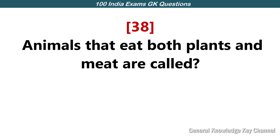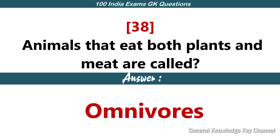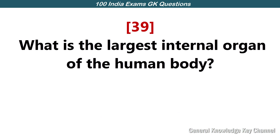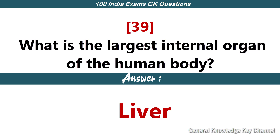Animals that eat both plants and meat are called? Answer: Omnivores. What is the largest internal organ of the human body? Answer: Liver.